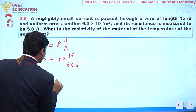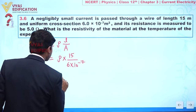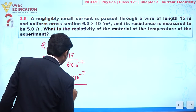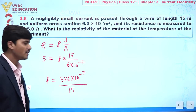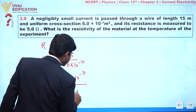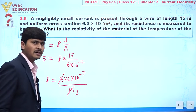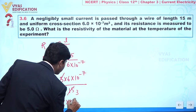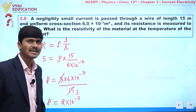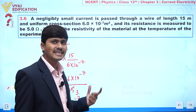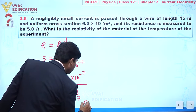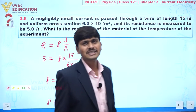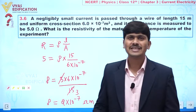From the formula, ρ = RA/L = (5 × 6 × 10⁻⁷) / 15, which simplifies to give ρ = 2 × 10⁻⁷. The unit of resistivity is ohm·meter. That is the complete solution to this question.